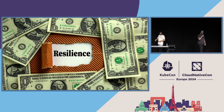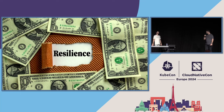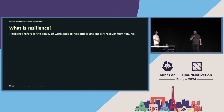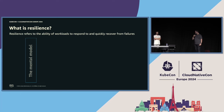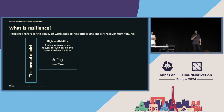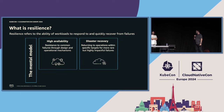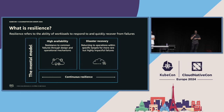But resilience comes with trade-offs. Sometimes it could be expensive or you don't know the cost of it. Resilience refers to the ability of workloads to respond to and quickly recover from failures. We think of a mental model: on one side, high availability — the resistance of your system to failures through design — and on the other, disaster recovery: how fast can you recover from a high-impact failure? Together, this creates a spectrum we call continuous resilience.